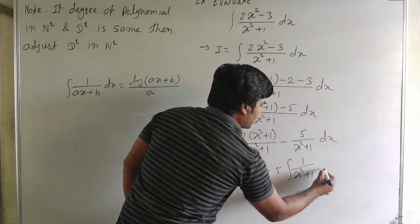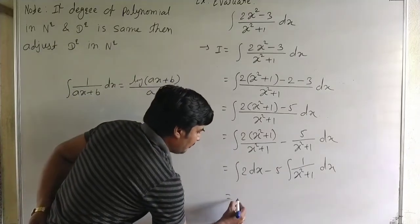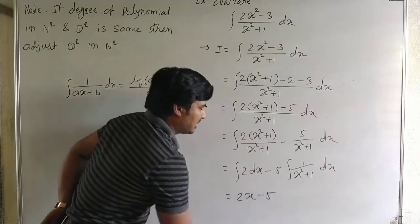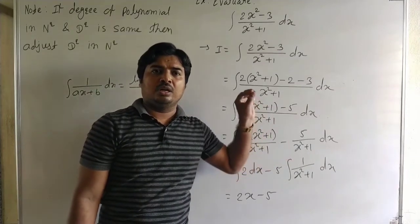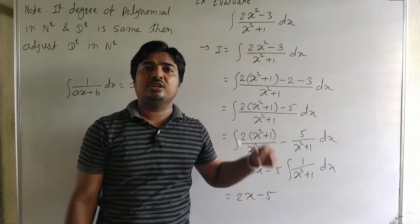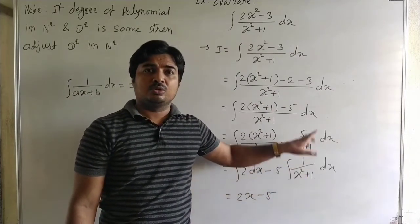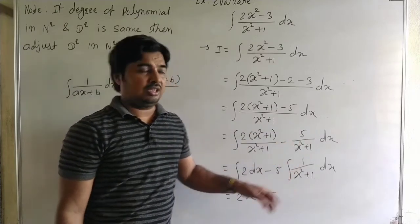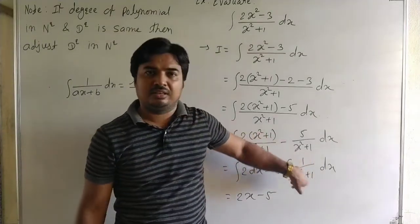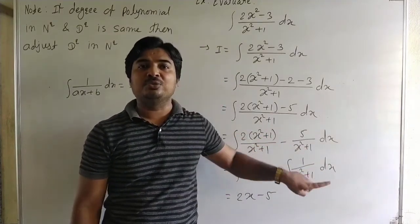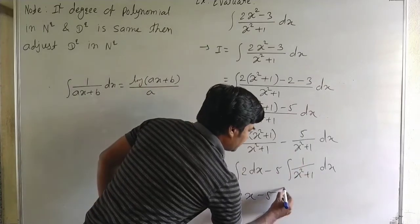So 2x square plus 2 minus 2 cancels, leaving 2x square and minus 3. The expression becomes 2 into (x square plus 1) minus 5 upon (x square plus 1) dx. Separate: 2 dx minus 5 into integral of 1 upon (x square plus 1) dx. In the last three examples we used integral of 1 by x equals log x, but here we have x to the power 2, so we cannot use that formula. Instead, integral of 1 upon (1 plus x square) equals tan inverse x, which is a standard formula.